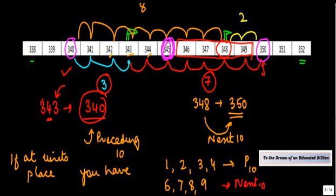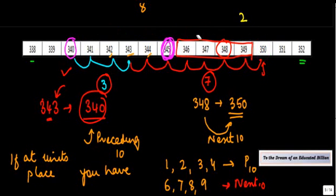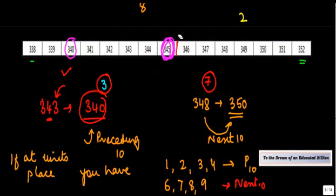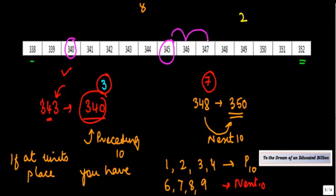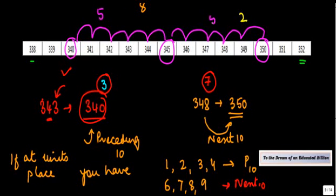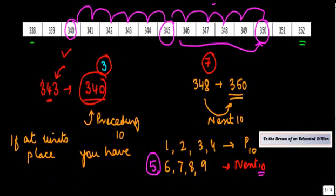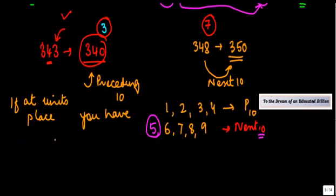But if you see there is one number over here which is 345. If I check how far is it from 340 and how far is it from 350, what you will find out is that this number is one, two, three, four, five, five places from 350 and one, two, three, four, five, five places from 340. So where do I round this off? The general rule is when you have five at the units place you round it off to the next 10. So if it is 345 it has to be rounded off to 350.